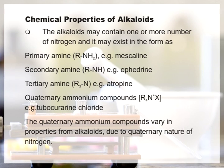Secondary amines have the general formula RR'NH — example ephedrine. Tertiary amines have the general formula R₃N — example atropine. Quaternary ammonium compounds have the general formula R₄N⁺X⁻ — example tubocurarine chloride. The quaternary ammonium compounds vary in properties from alkaloids due to the quaternary nature of nitrogen.